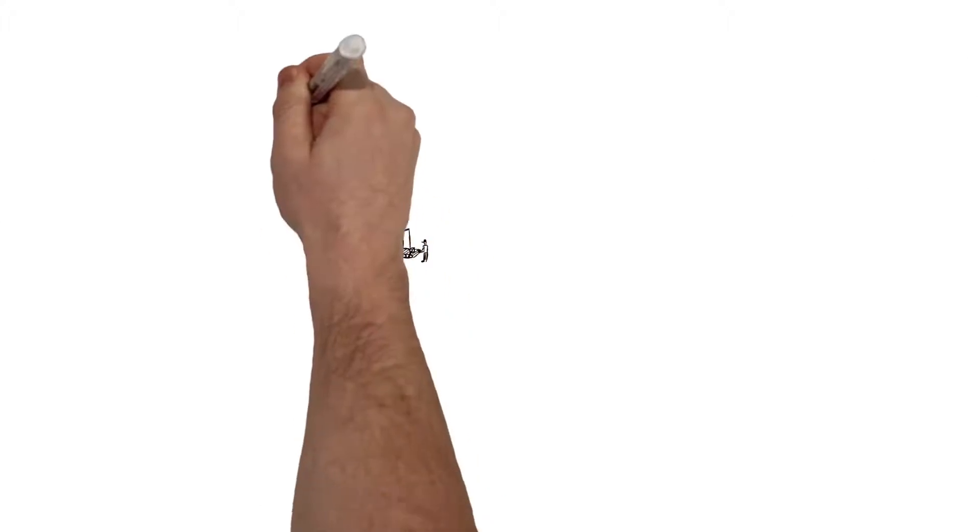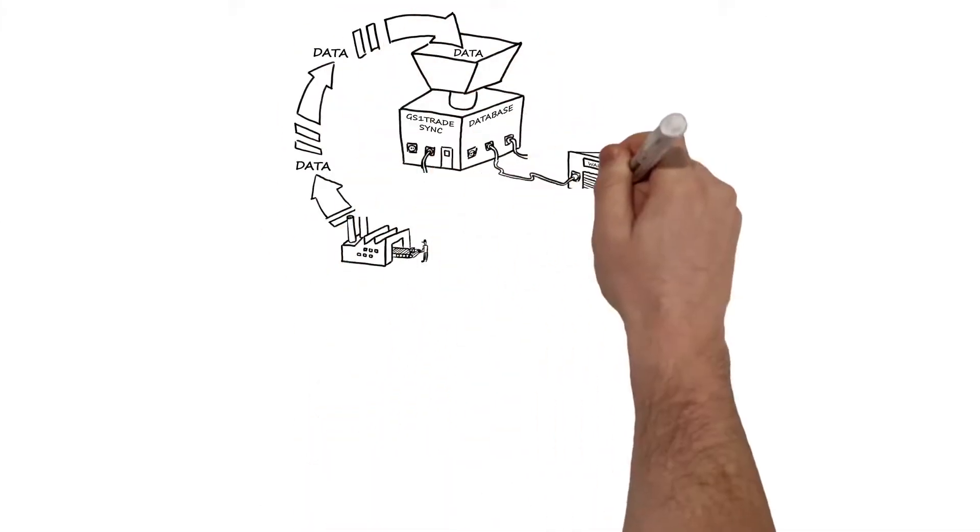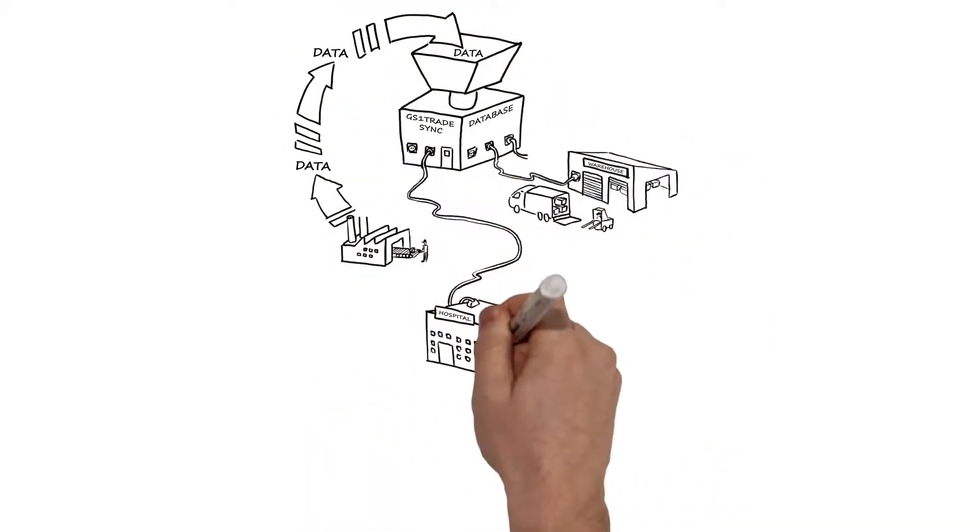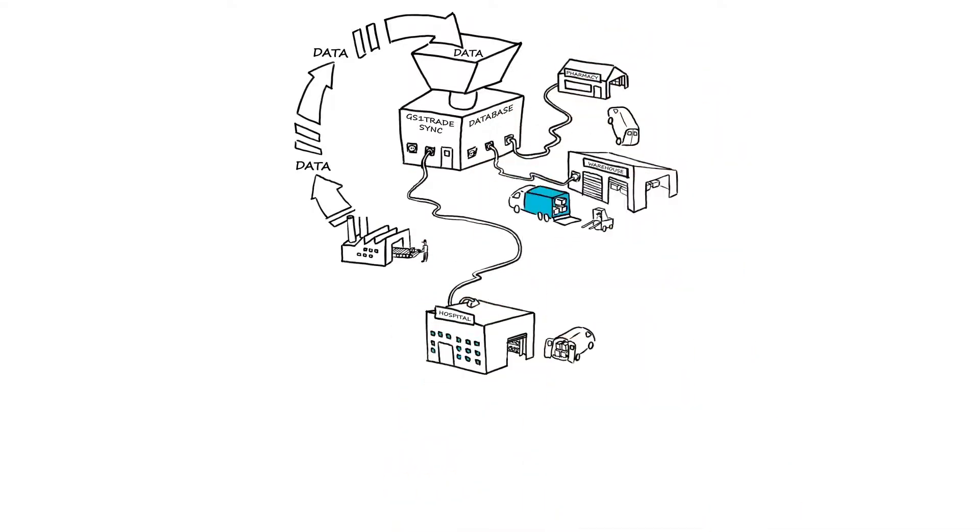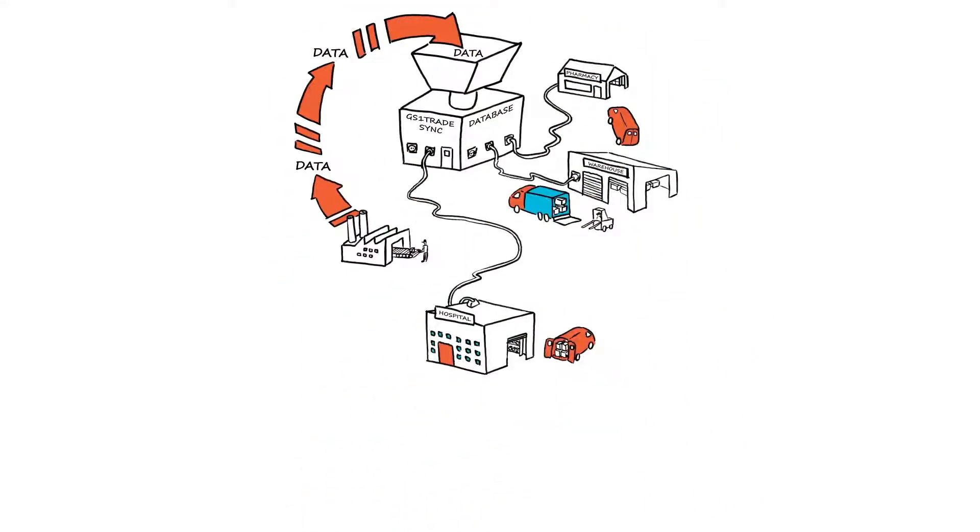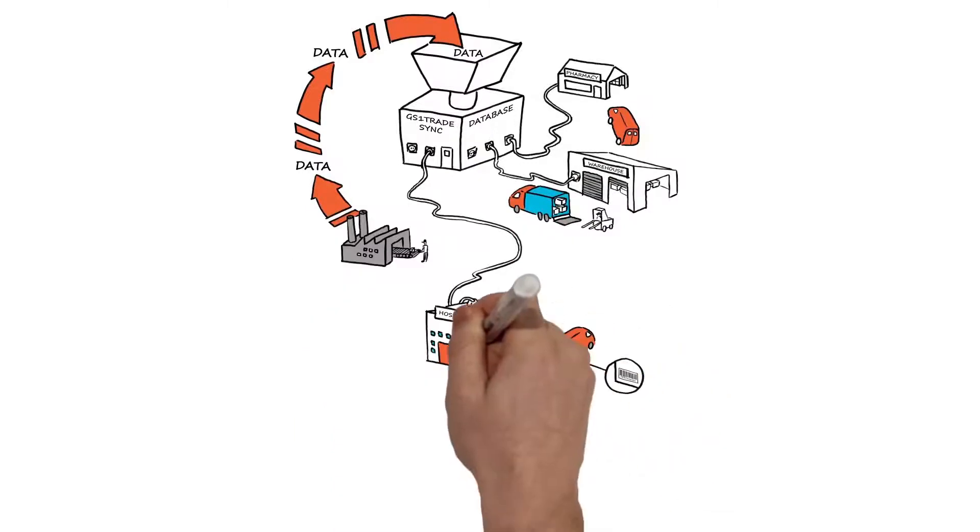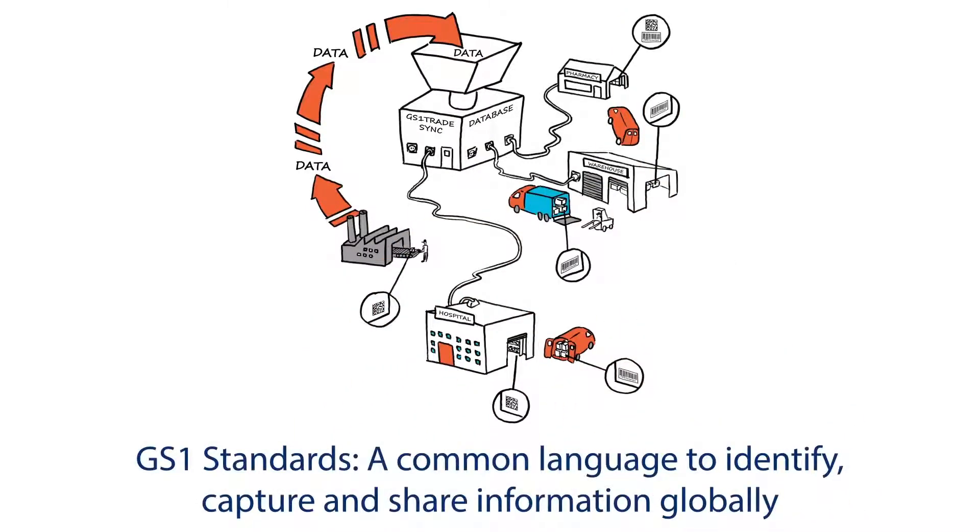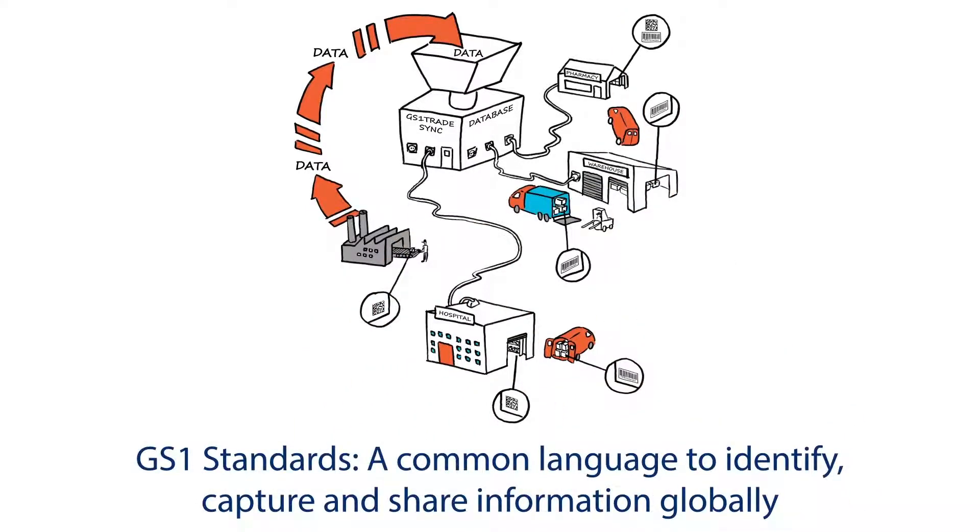A unique number is allocated for each product, which then makes up a barcode and is linked to data in a central database. The barcode can be scanned at every point of the supply chain, from manufacturer to treating the patient, which enables complete traceability.